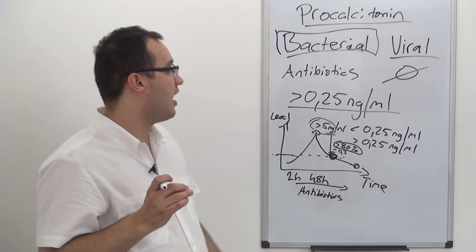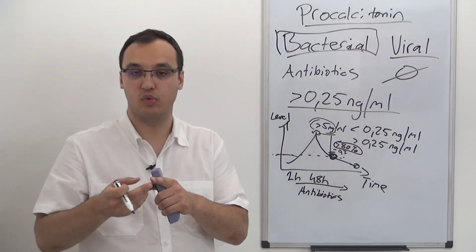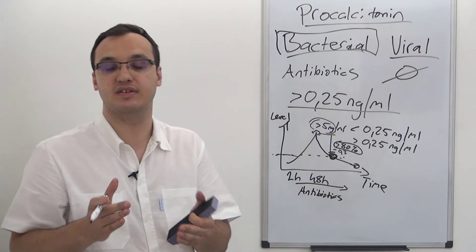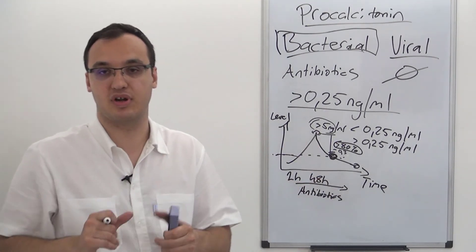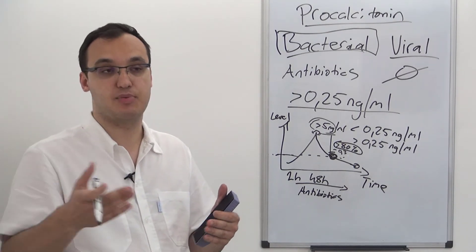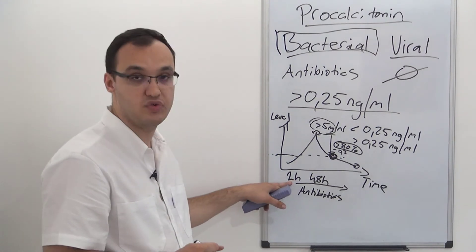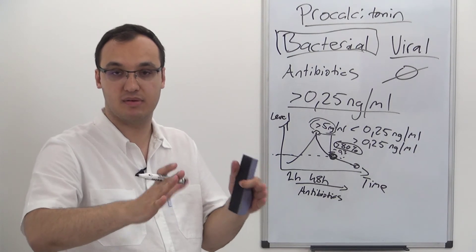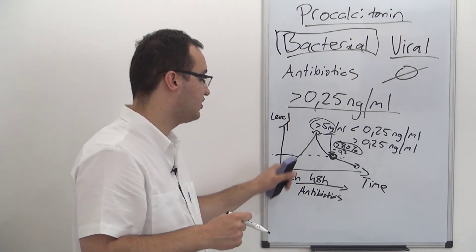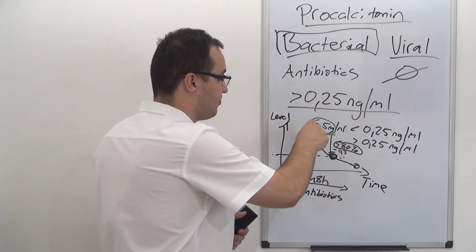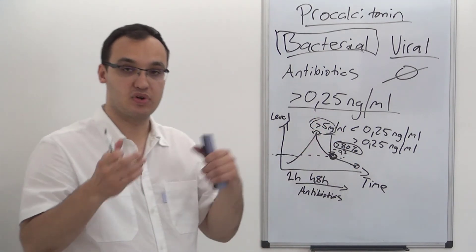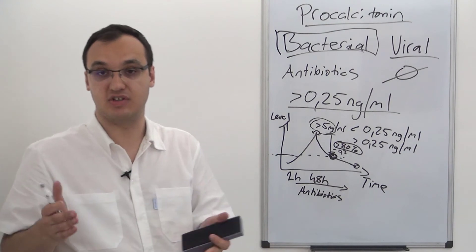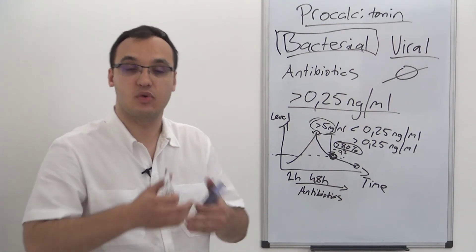The simple stopping criterion is a procalcitonin level less than 0.25. Now to summarize the workflow: when a patient arrives, take the procalcitonin level before starting antibiotic treatment — but not too early, as it takes two hours to rise, so taking it too early gives a false negative. Start empiric antibiotic treatment and measure procalcitonin every two days. When the pattern shows less than 0.25, or peak above 5 with an 80% drop, and the patient has no fever, you can stop treatment and send the patient home.